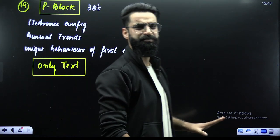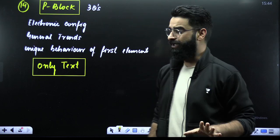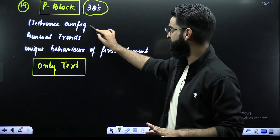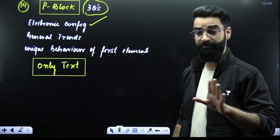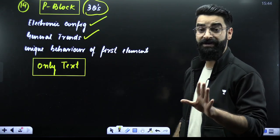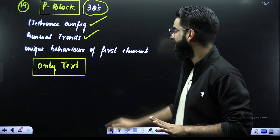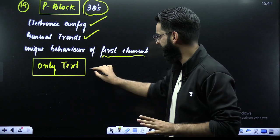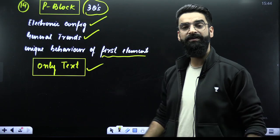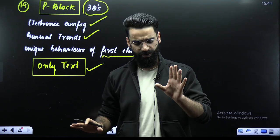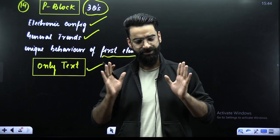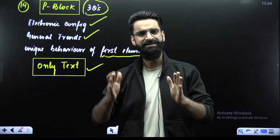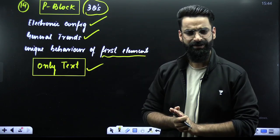The last part is P block elements, which includes group 13 to group 18 elements — three questions will be asked. Short topics: electronic configuration of groups 13 to 18, general trends of P block, and unique behavior of the first element of each group. Study this chapter only from NCERT — no need for lectures; NCERT is more than sufficient for P block elements.